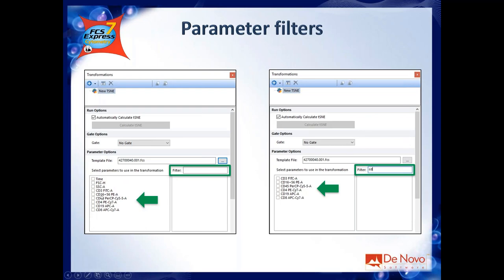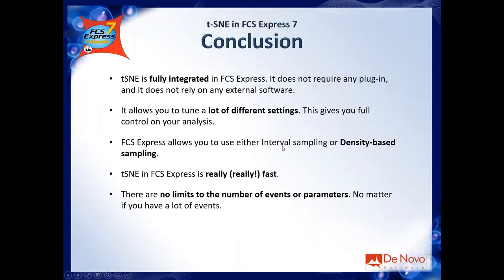Instead of clicking parameters one by one, you will be able to type a filter — for example 'CD' — and the parameter list will be automatically filtered. Then right-click and select all matching parameters. To conclude: FCS Express fully integrates tSNE, allowing you to tune many different settings with the FCS Express implementation.